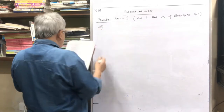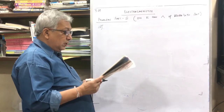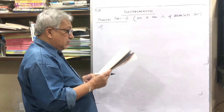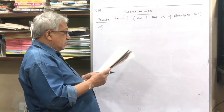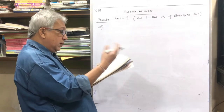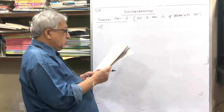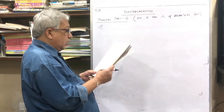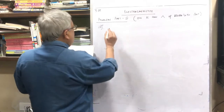Read the problem carefully. A conductivity cell filled with 0.01 molar KCl gives at 25°C a resistance of 604 ohm. The conductivity of KCl at 25°C is 0.00141 ohm inverse centimeter inverse. The same cell is filled with 0.001 molar AgNO3 and gives a resistance of 6529 ohms. Calculate the molar conductivity of 0.001 molar AgNO3 solution at 25°C. So I write the data like this.